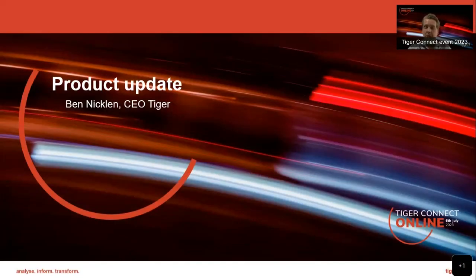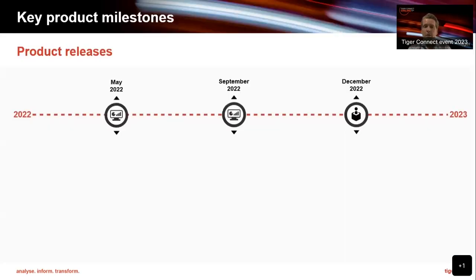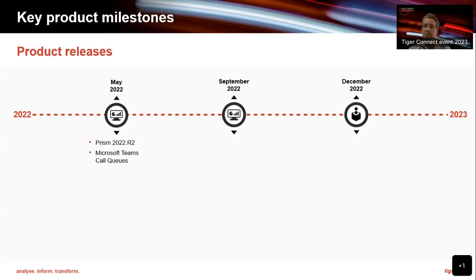This brings us to the product update. We try to release at least three times a year. As part of the development methodology, we can release more frequently depending on need. Going back to May 2022, we released 22r2, which included a new Microsoft Teams call cubes feature. This was built on customers needing to report and analyze call queue and attendance by performance, so we launched that capability.